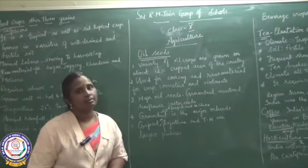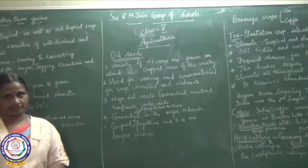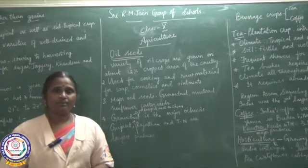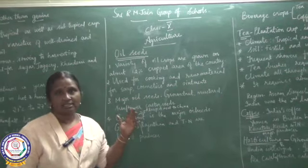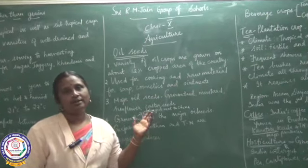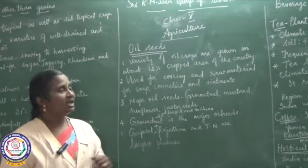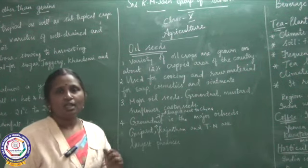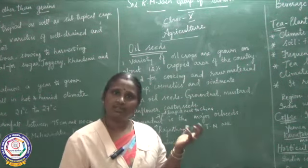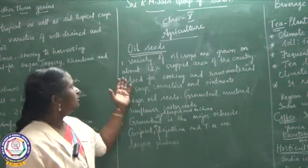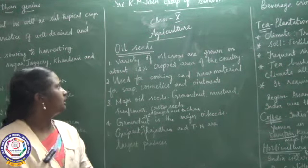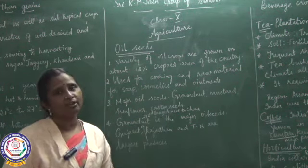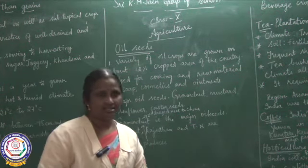Next we are going to see about oil seeds. The seeds which are grown for the oil purpose we call oil seeds. Among them, groundnut is given major importance for its oil. Almost 12% of the cropped area of the country is under oil seeds.